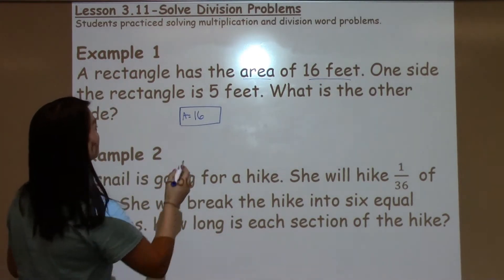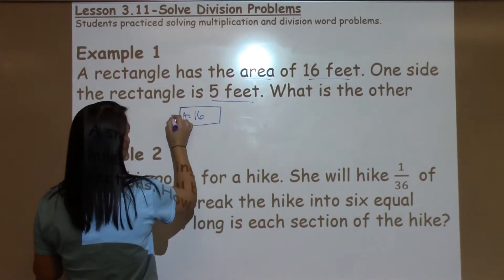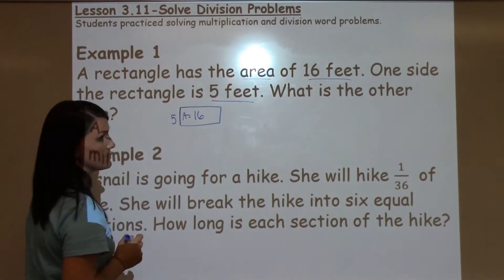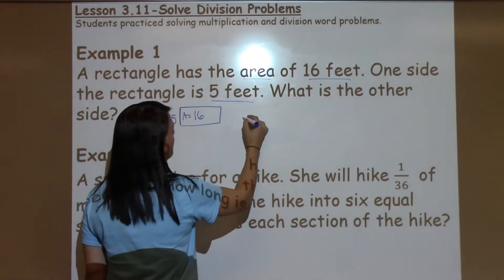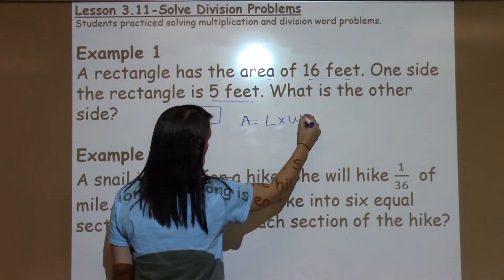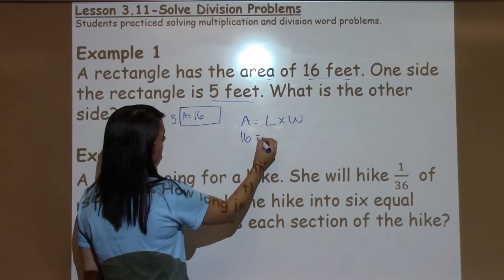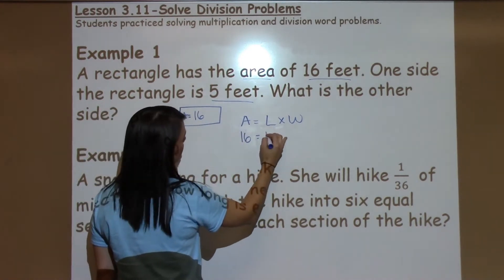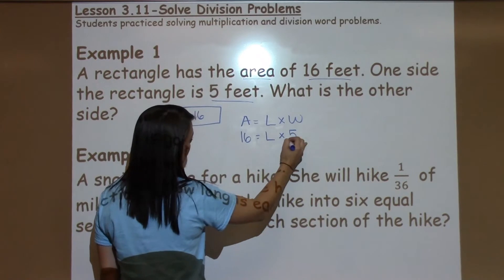One side of the rectangle is 5 feet, so I know that one side is 5. What is the other side? Well, I know that the formula for finding the area of a rectangle is length times width. In this problem, I have the area and I have the width, so I'm still missing the length.